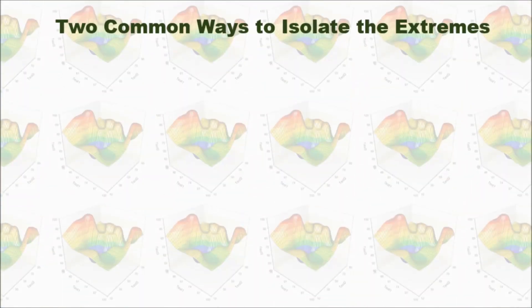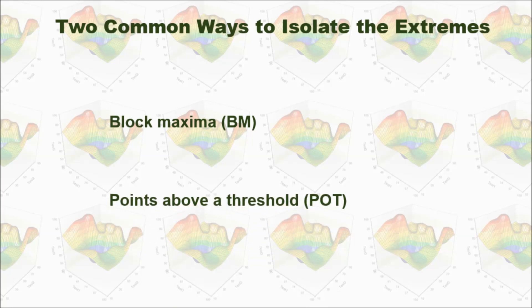There are two common ways to isolate the extremes. One is block maximum. Another one is points above the threshold.